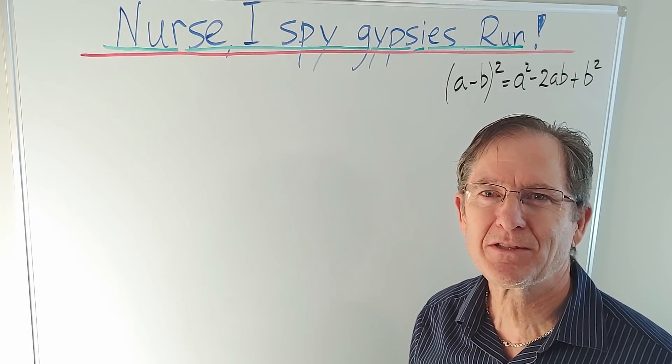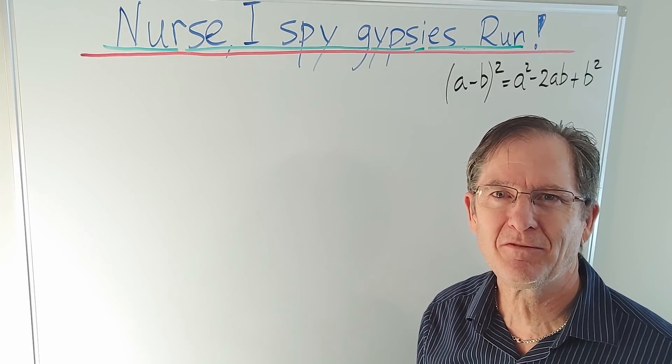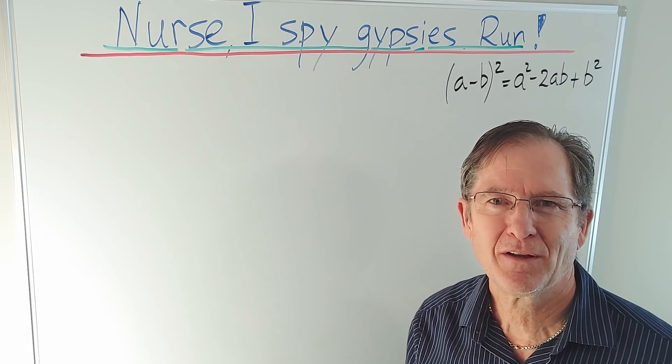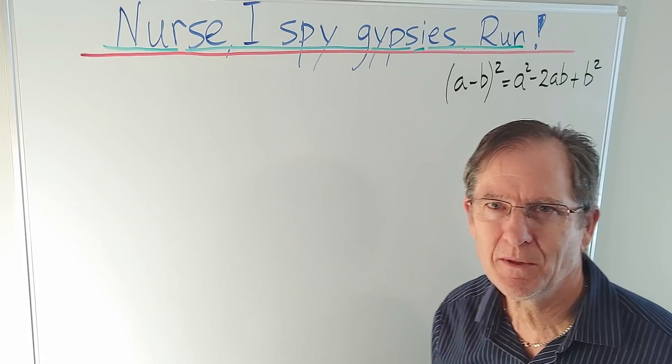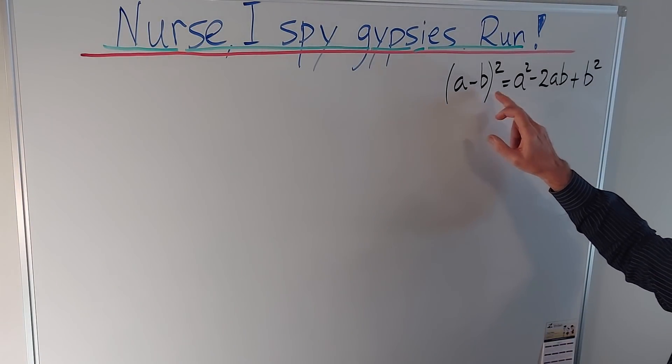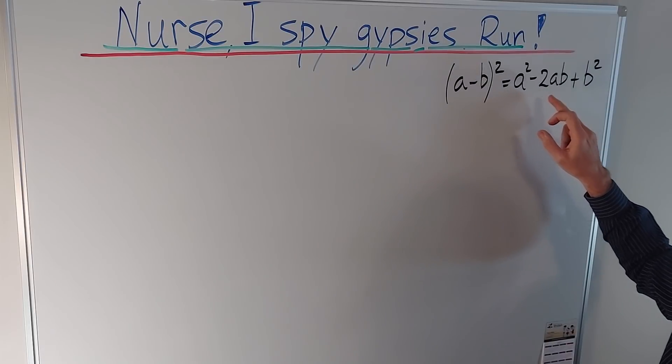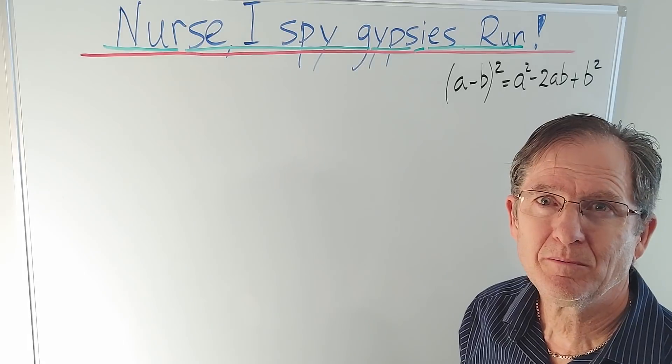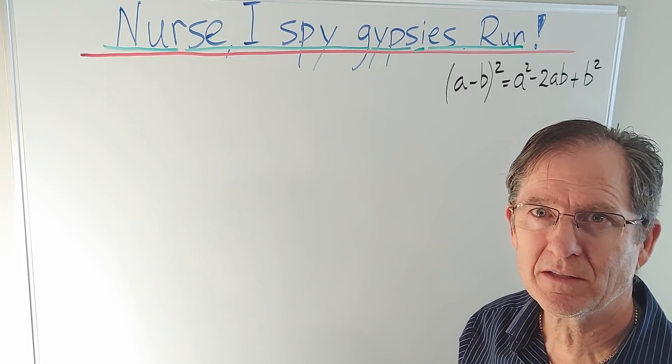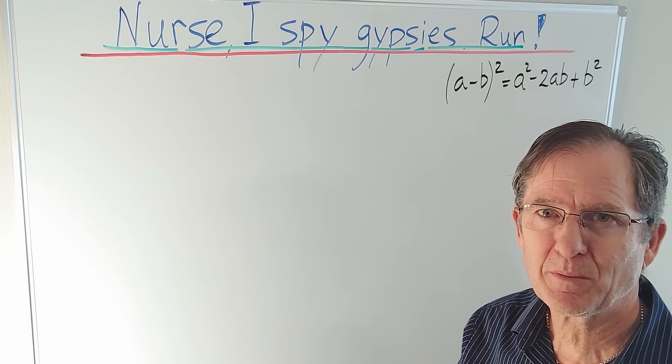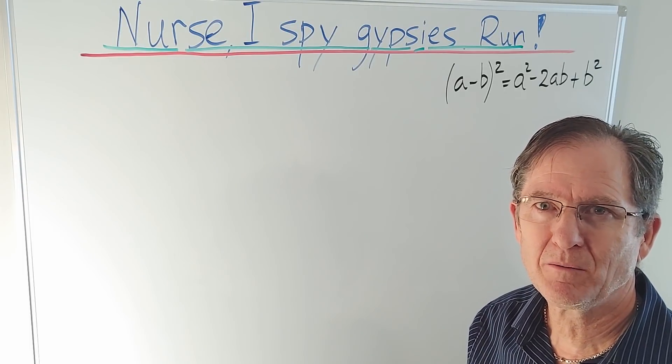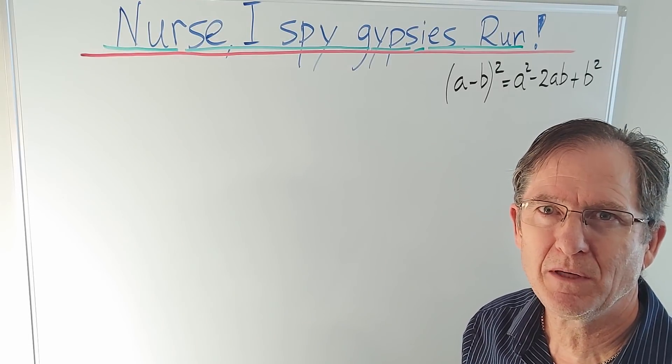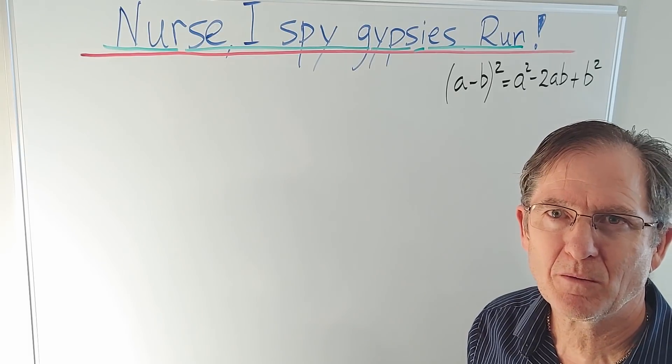Now today I'm going to prove that one equals two for the third time because some of you still don't believe me. Some of you find fault with those other proofs. This one I don't think you'll be able to find fault with. I'm going to be using the identity (a minus b) squared equals a squared minus 2ab plus b squared. If you're not familiar with that you can prove it to yourself by simply writing out (a minus b) twice, multiplying both terms in the first bracket by both terms in the second bracket. We call that FOIL in English. Add the middle two terms which will both be negative ab and you'll get that expression. Otherwise just take my word for it.